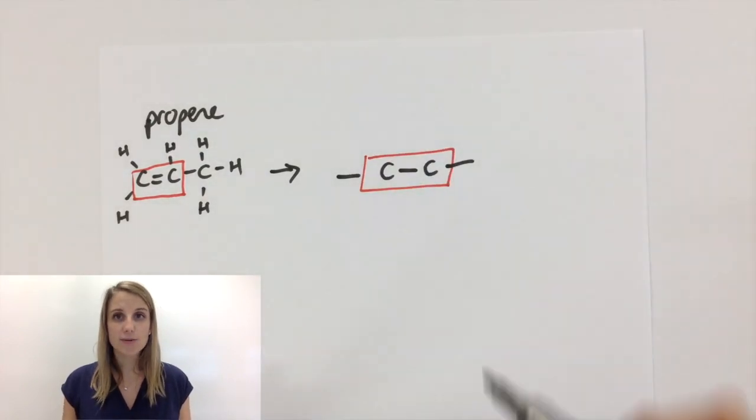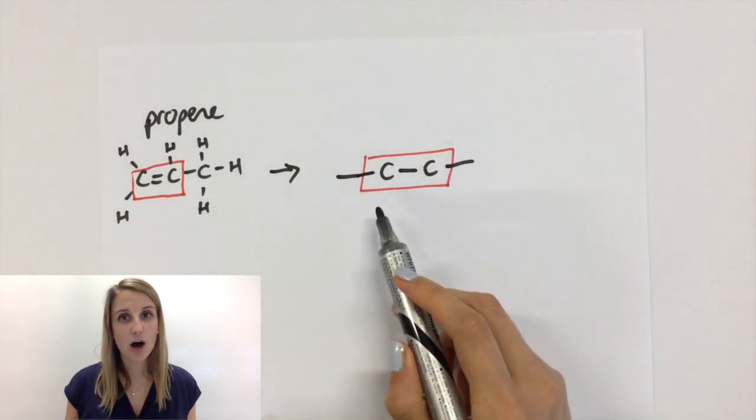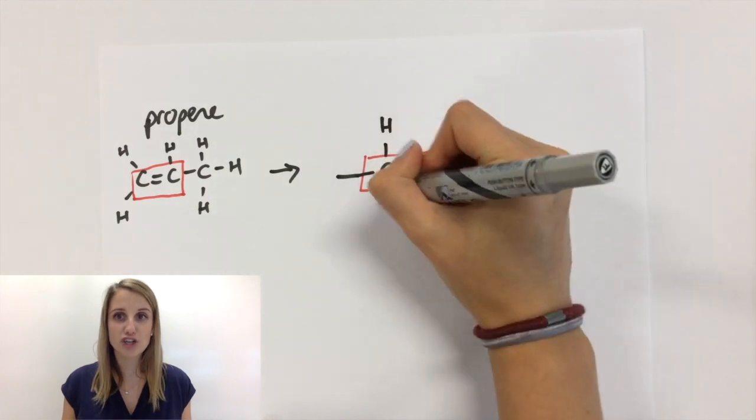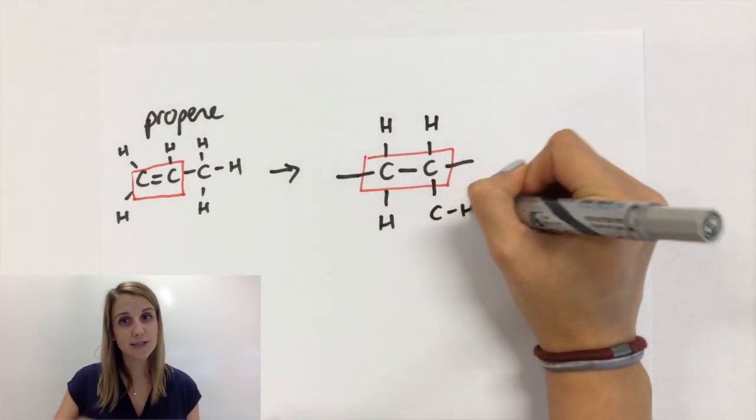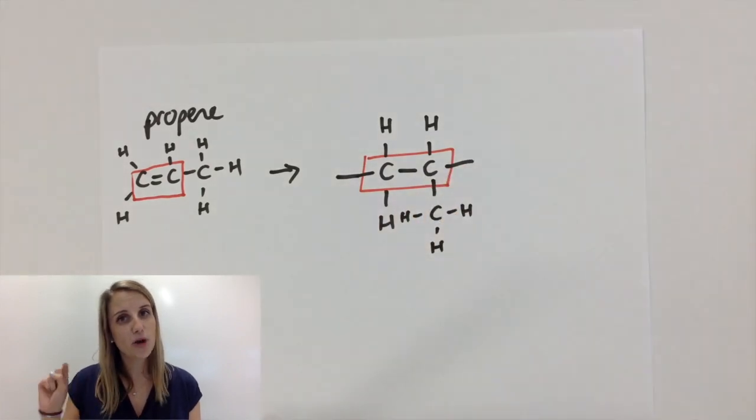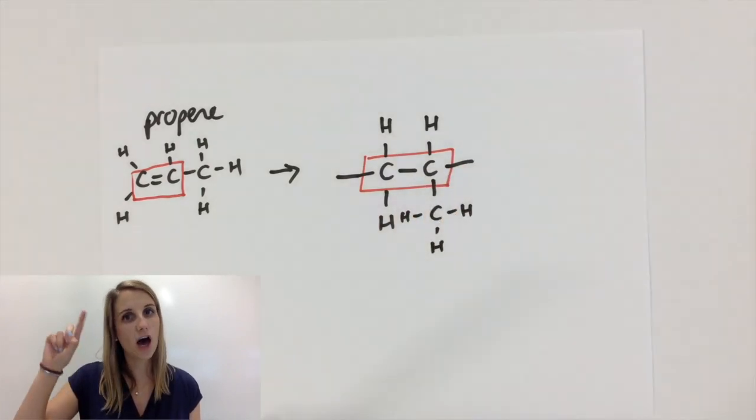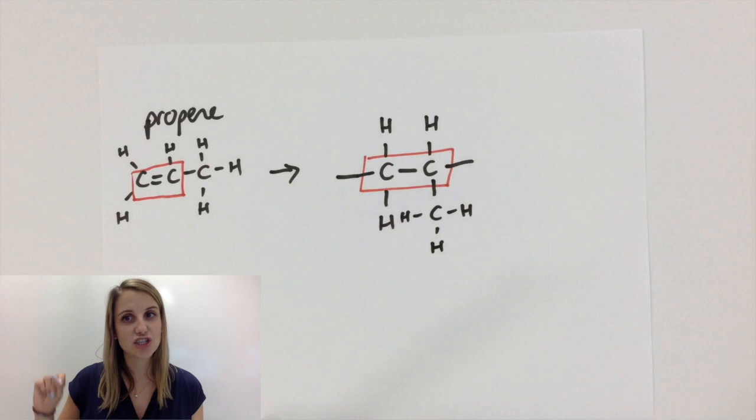What I'm going to add on to each of these carbons is what was bonded to them originally. So the carbon on the left has two hydrogens bonded to it, and the carbon on the right of the double bond has a hydrogen and a CH3 group.